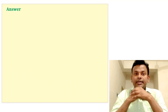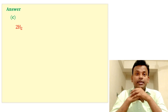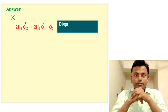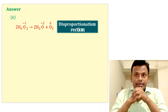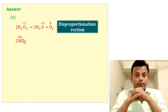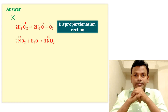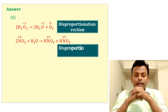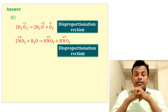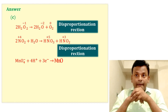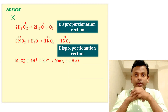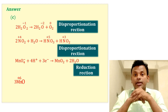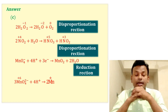The answer is option C. The first reaction is a disproportionation reaction. The second reaction is also a disproportionation reaction. The third reaction is a reduction reaction, not a disproportionation reaction. The fourth reaction is also a disproportionation reaction. So option C is the correct answer.